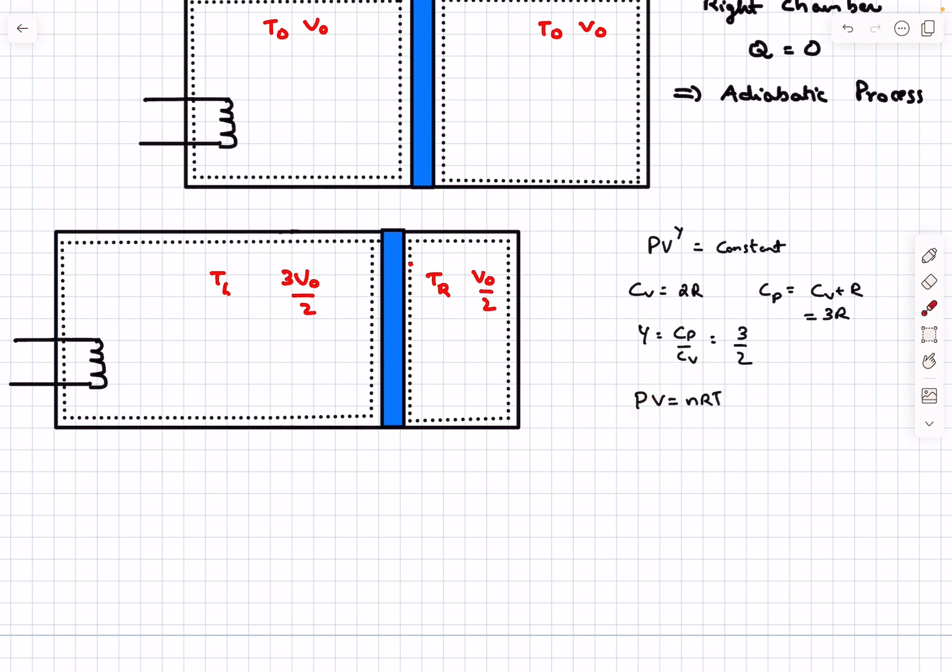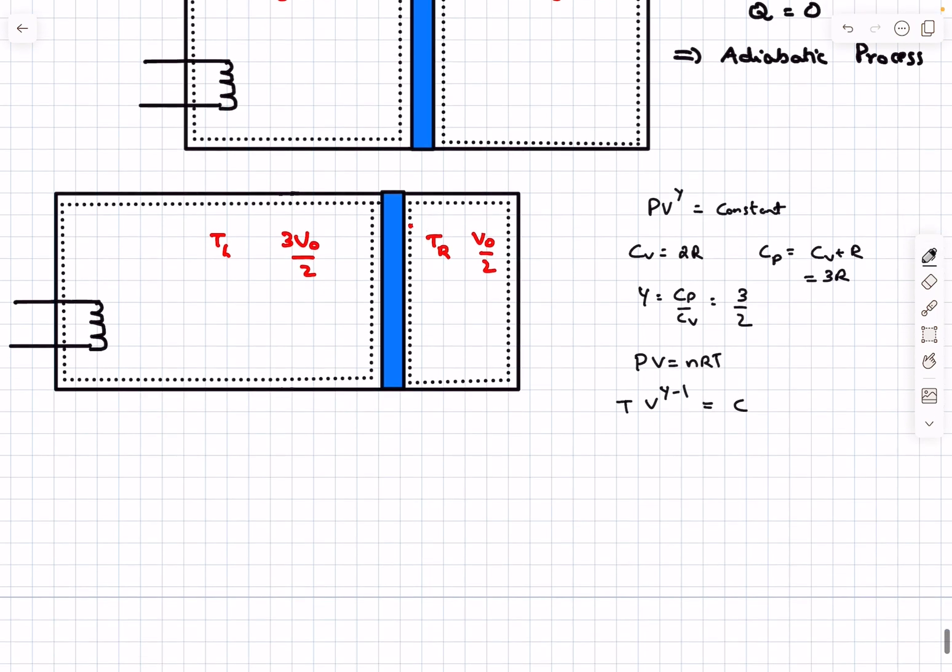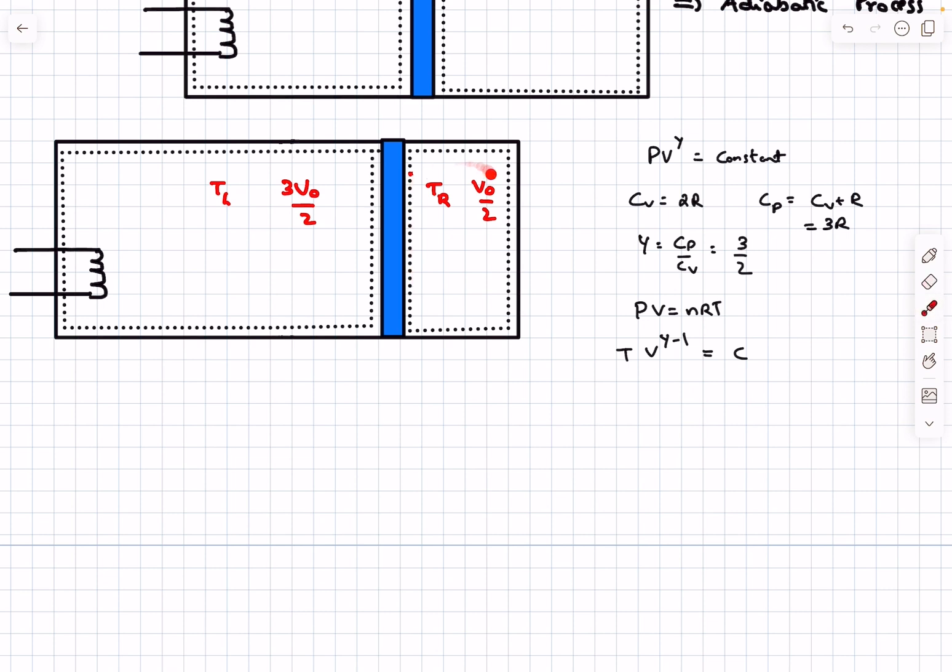The ideal gas equation says PV = nRT, so pressure P is proportional to T/V. If I substitute this, then TV^(γ-1) has to be a constant. We can apply this for the right chamber.